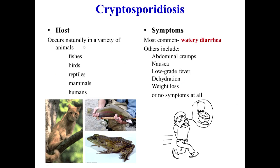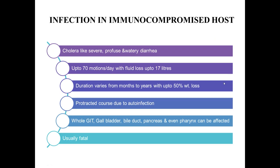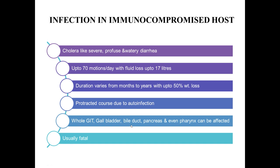The most common symptom is watery diarrhea. Other symptoms include abdominal cramps, nausea, low-grade fever, dehydration, weight loss, or no symptoms at all. In immunocompromised hosts, it produces a very severe cholera-like diffuse watery diarrhea — up to 70 motions per day with loss of up to 15 to 20 liters of water. Duration can vary from months to years, with up to 50% weight loss. There is a protracted course due to autoinfection, and the whole GI tract, bile ducts, pancreas, and even pharynx can be infected. It is usually fatal in immunocompromised hosts.